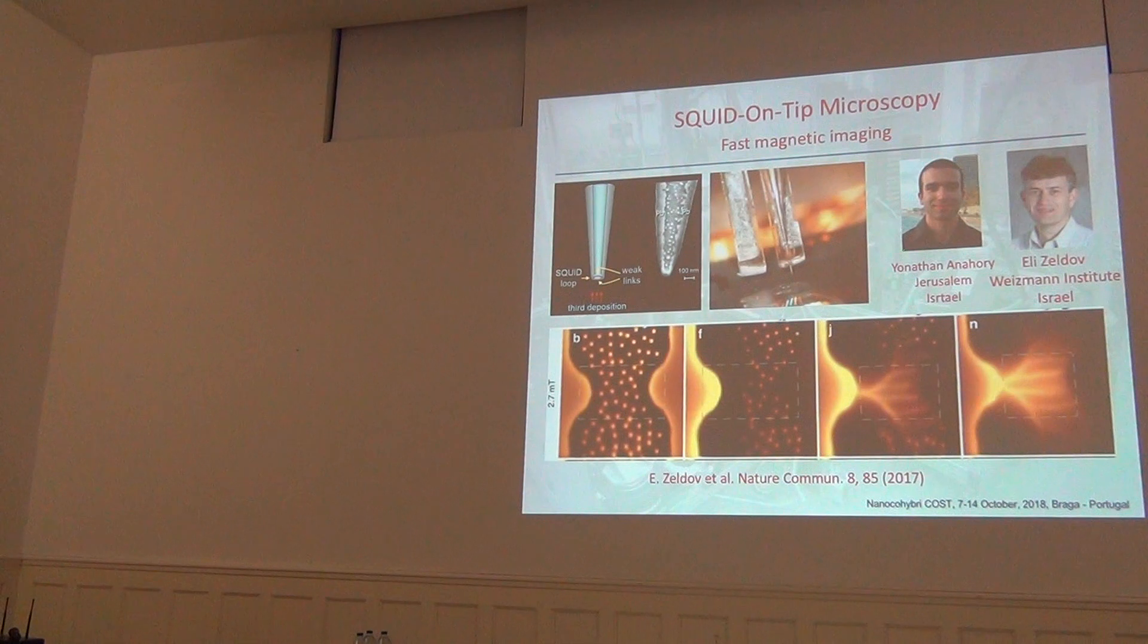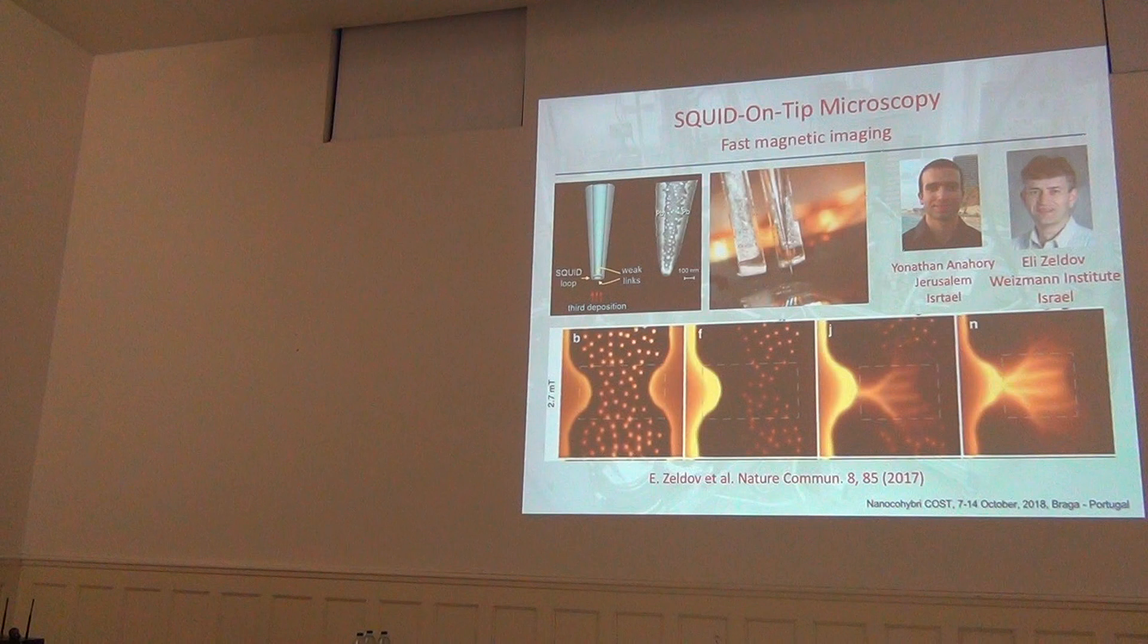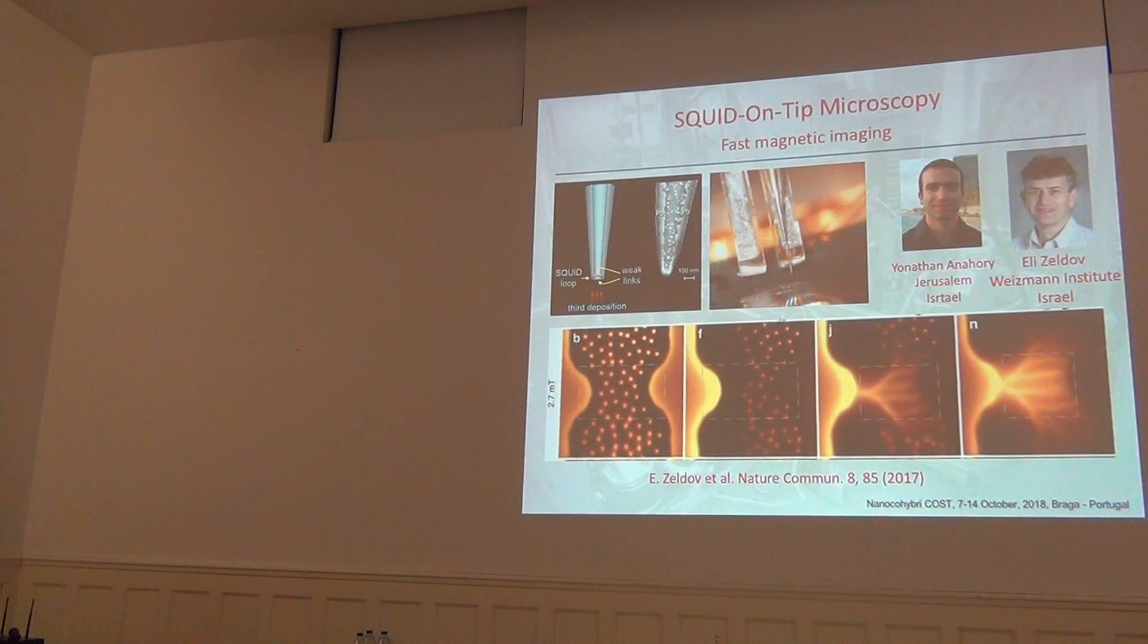Now, starting from this, they do a very simple device. They have an evaporator of superconducting material, lead or niobium, and they put this capillary perpendicular to the evaporation beam, and in such a case, they deposit one of the electrodes, and by shadow, nothing is deposited on another side. Now, they turn it 180 degrees, and they deposit another electrode, and by shadow, nothing is deposited in between.